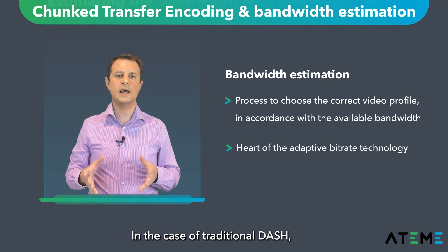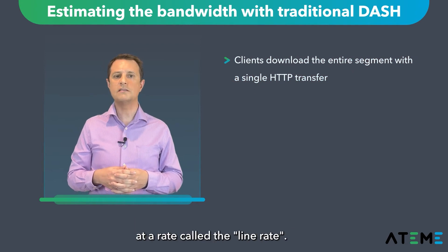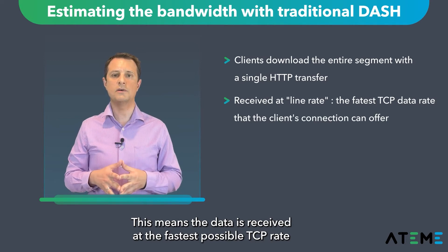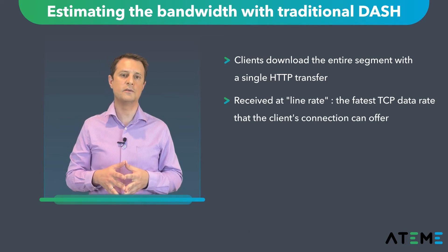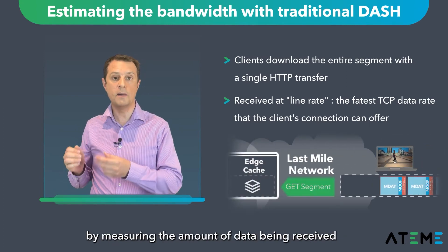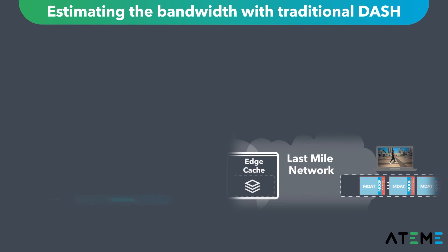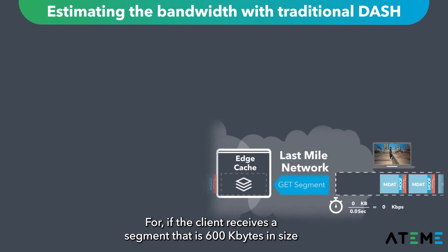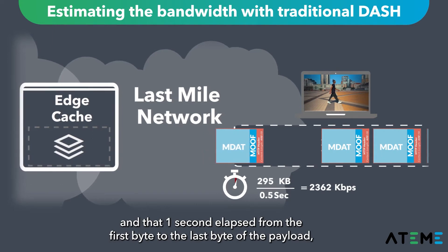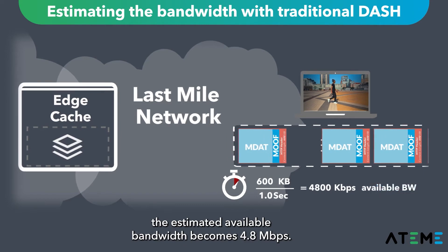In the case of traditional DASH, the client gets the entire segment through a single HTTP transfer at a rate called the line rate, meaning the data is received at the fastest possible TCP rate that the client's connection can offer. The client can then deduce the available bandwidth by measuring the amount of data received and dividing it by the time it took. For example, if the client receives a segment that is 600 KB in size and one second elapsed from the first byte to the last byte of the payload, the estimated available bandwidth becomes 4.8 Mbps.